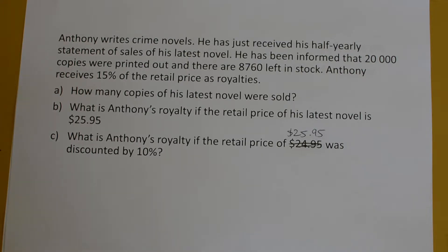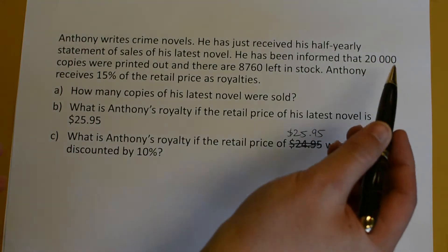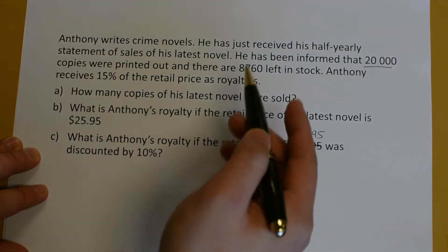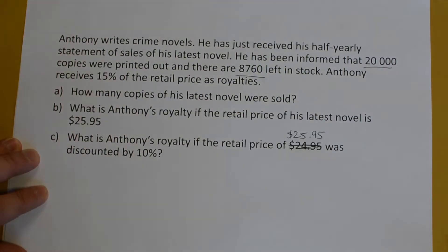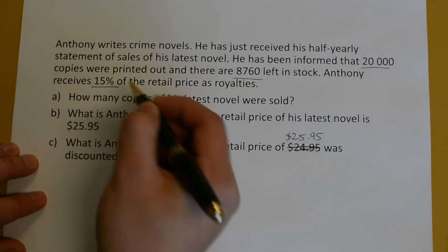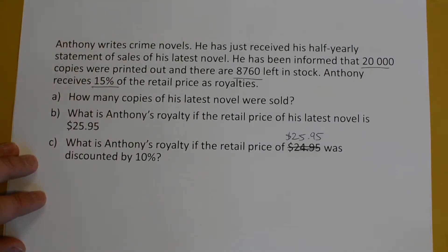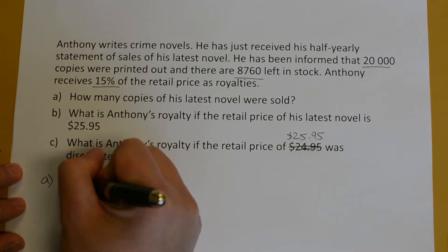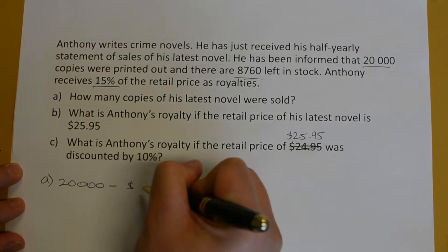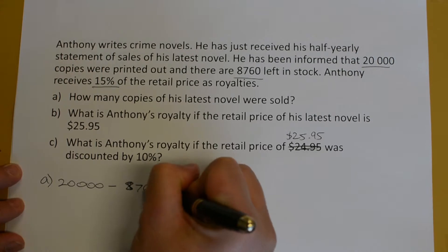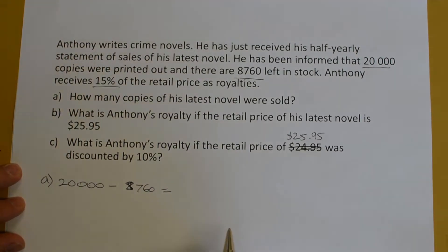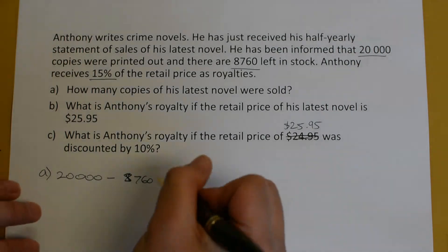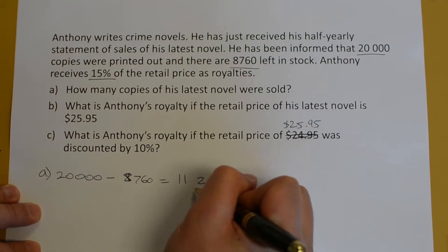Here is an example. Anthony writes crime novels and has just received his half-yearly statement of sales of his latest novel. He has been informed that 20,000 copies were printed and there are 8,760 left in stock. Anthony receives 15% of the retail price as royalties. How many copies of his latest novel were sold? That is found by taking the 20,000 printed minus 8,760 left over, which gives you 11,240 copies sold.